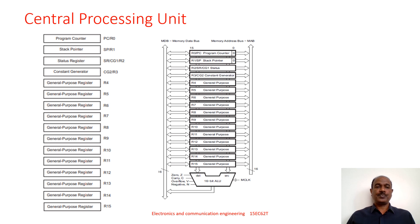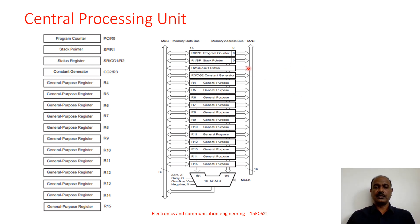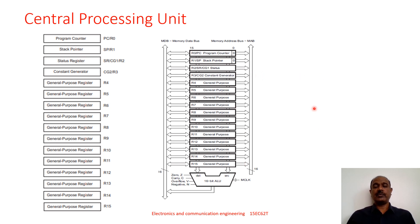Next, let us study the central processing unit of the MSP430F2013 microcontroller. This CPU is based on RISC architecture — reduced instruction set architecture — meaning it has only a limited number of instructions. There are 27 native instructions plus 24 emulated instructions, giving a total of 51 instructions available for the MSP430F2013 or any MSP430 microcontroller.